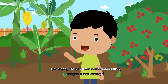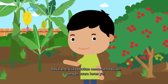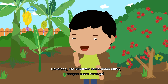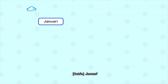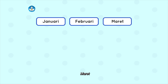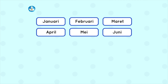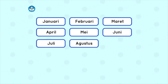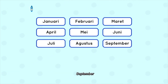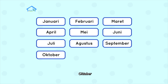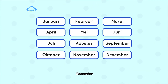Sekarang kita sebutkan nama-nama bulan dengan suara keras ya. Januari, Februari, Maret, April, Mei, Juni, Juli, Agustus, September, Oktober, November, Desember.